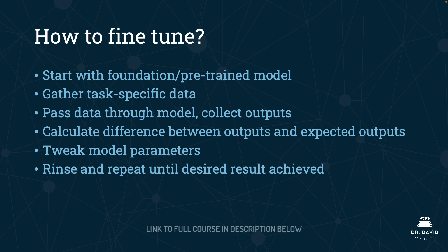How do we fine-tune? We start with a pre-trained foundation model. We gather task-specific data and pass all of that data through the model. We collect the outputs and then calculate the difference between the outputs we have and what we expected. We tweak the model parameters appropriately, and we rinse and repeat until we get the desired result. You don't need to know this level of specificity for the AIGP exam — this is supplemental for those that want to understand a little bit more about how the fine-tuning process happens.